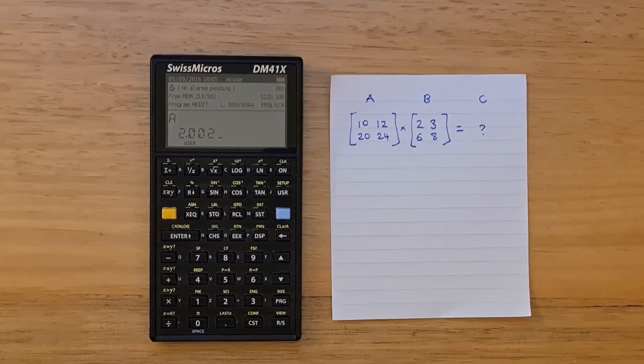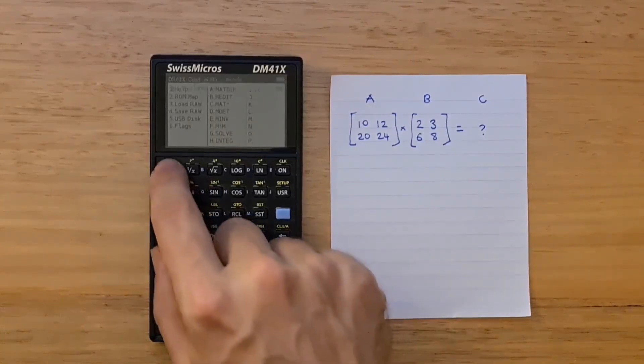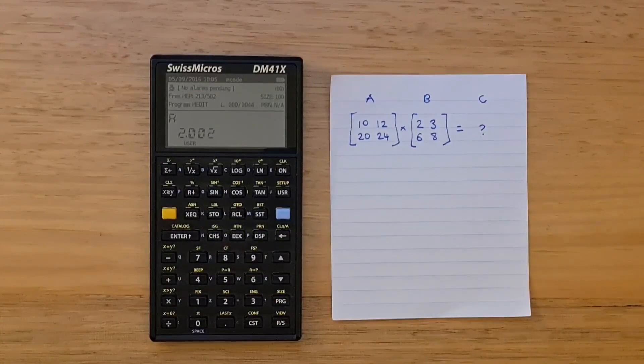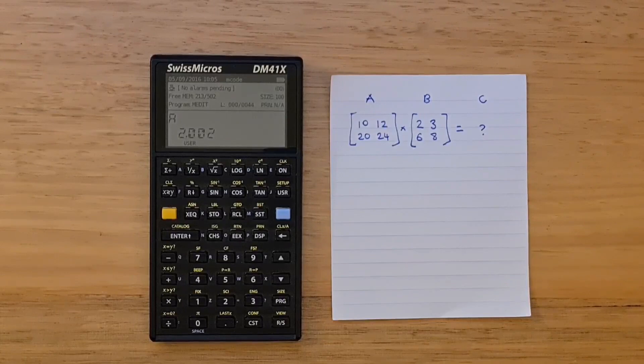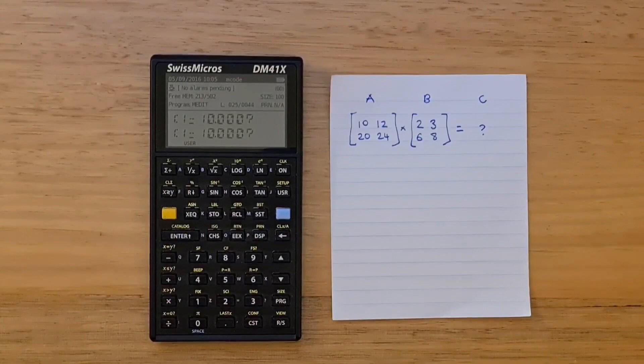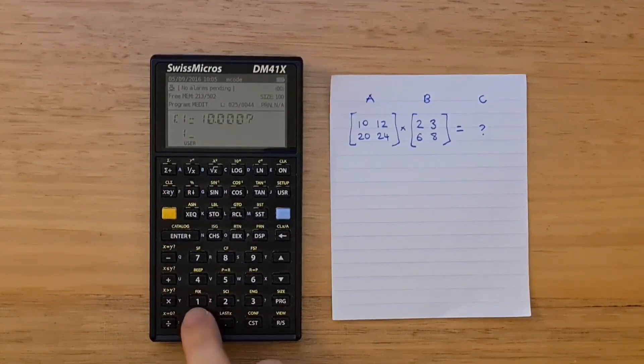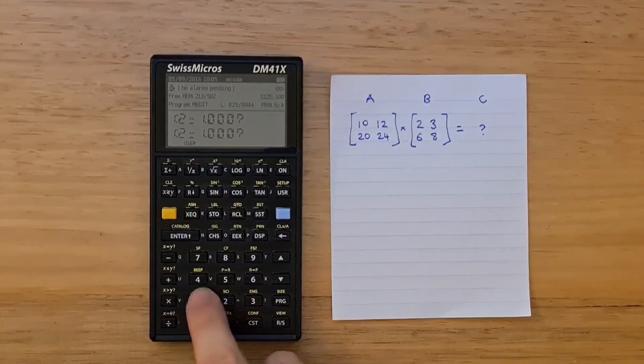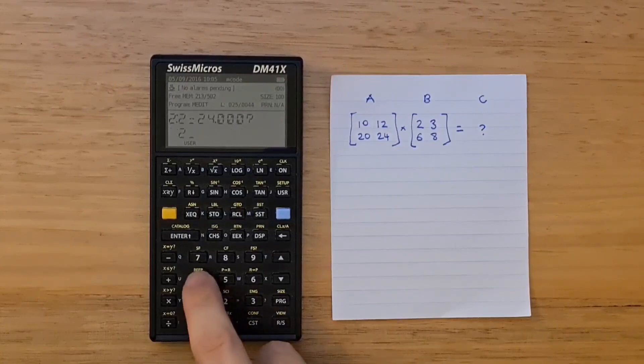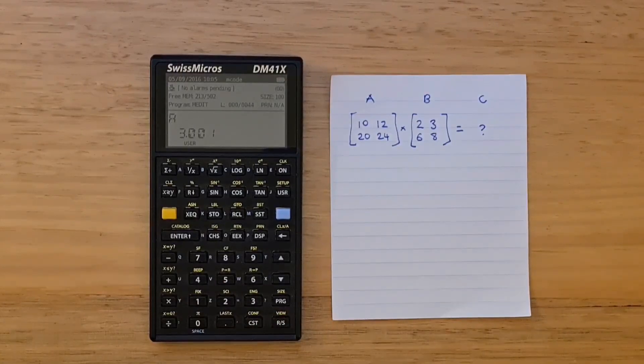Now I'll run the matdim function via custom key previously set up. Now to populate the matrix, use the mEdit command. Again, this takes the matrix name in the alpha register. I'll enter my matrix values in rows starting from the top left. I've already created matrix B and populated the values.